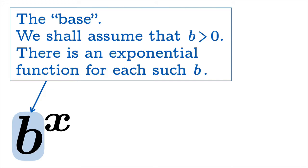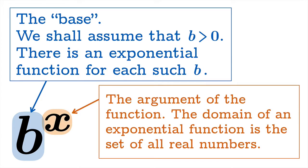We're going to assume all our bases are positive. There's an exponential function for each choice of base — really a whole family of exponential functions for all the different positive numbers you could choose. The x in this expression is the argument of the exponential function. The domain of an exponential function is the set of all real numbers, which is actually a deep statement we'll have more to say about shortly.